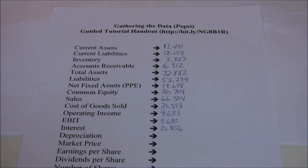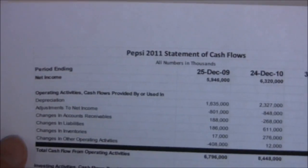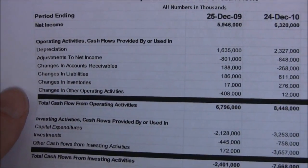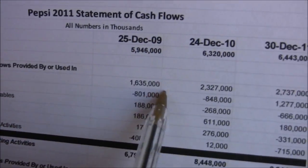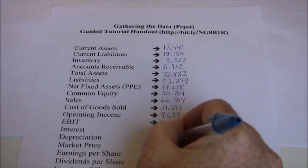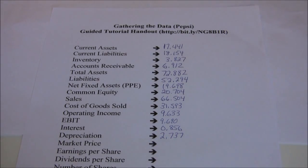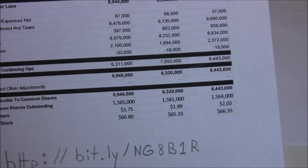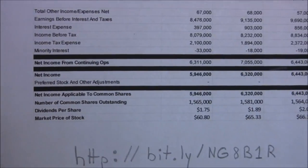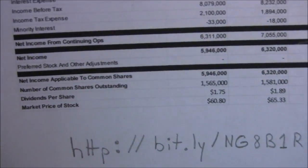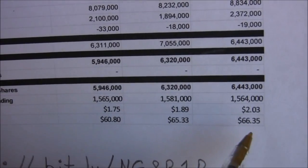Next we need depreciation, which comes from the statement of cash flows. We grab the Pepsi 2011 statement of cash flows — one of the first adjustments from net income is depreciation, which is $2.737 billion. For market price, you can usually get today's price from Yahoo Finance or many other online sources, but for this example we'll use the market price I recorded when preparing this handout, which at the time was $66.35.